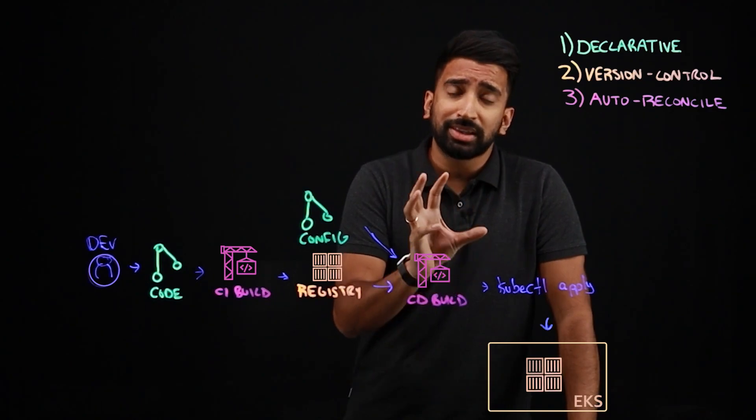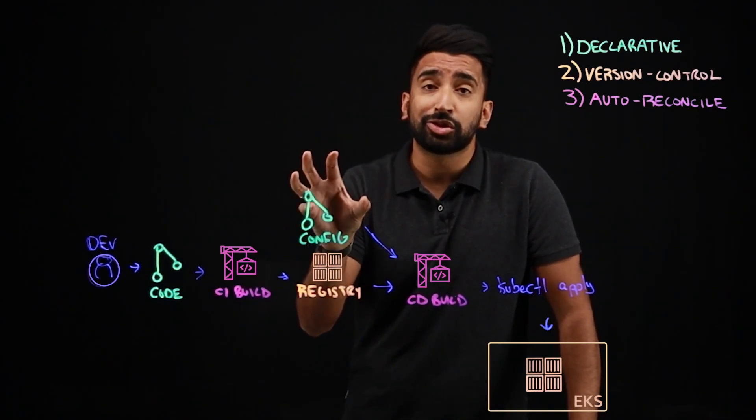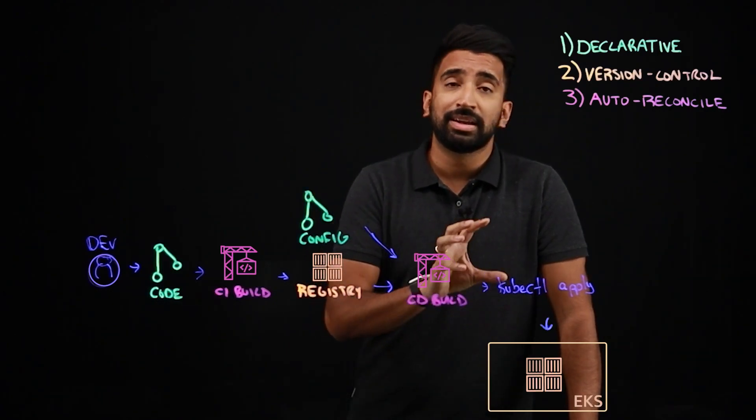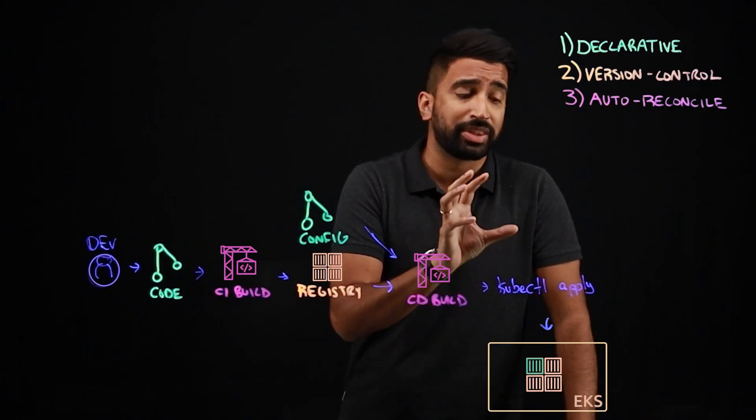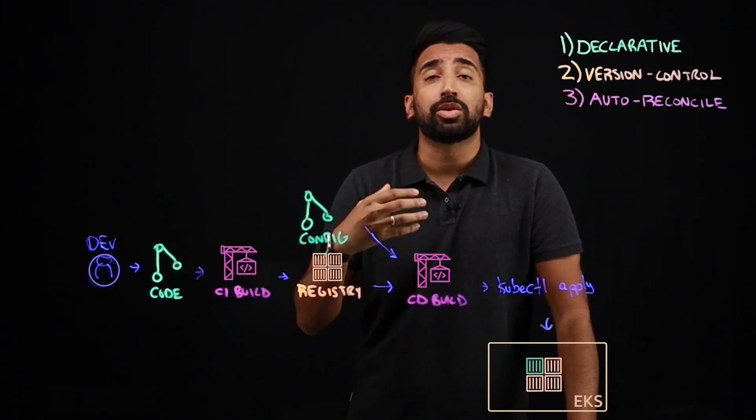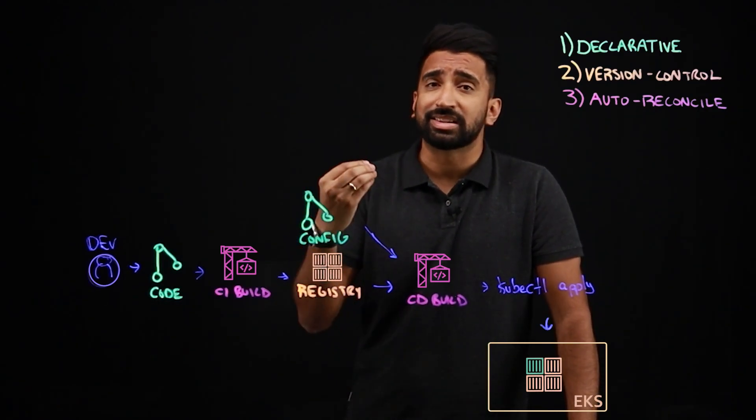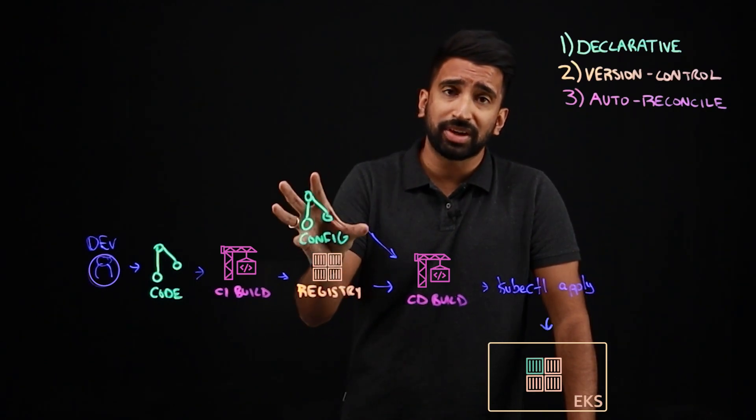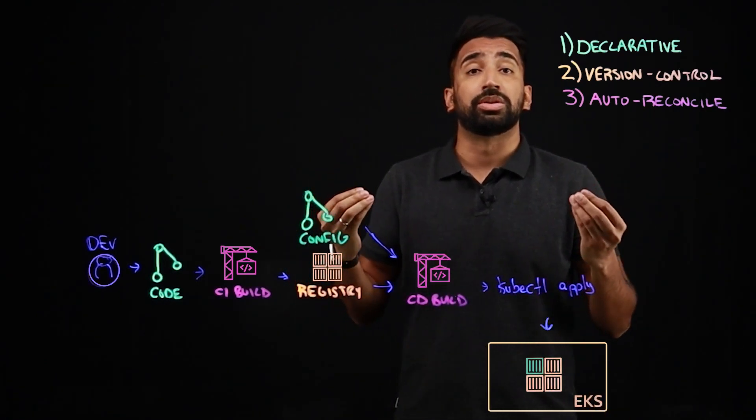But unfortunately, this is not true GitOps for one critical reason. This config is not the true source of truth. Something could change in the cluster itself, but the build thinks the state of the cluster or the environment is the last time the build was run. And so to be true GitOps, we need some sort of reconciler that's reconciling the state of the config and the state of the cluster that's going to make it a true source of truth.